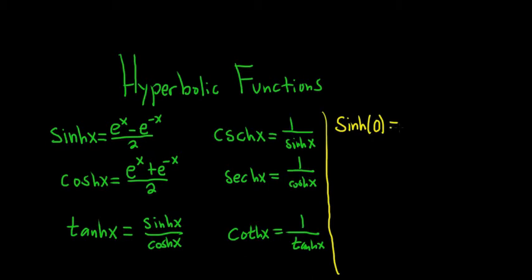So in this case, we would just plug in 0 for all of the x's. So we would get e to the 0 minus e to the negative 0 all over 2. So e to the 0 is 1, so you would just get 1. Here, you also get e to the 0, so you also get 1.